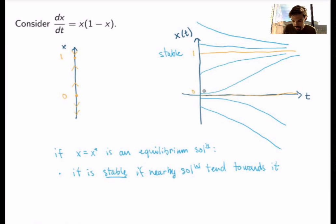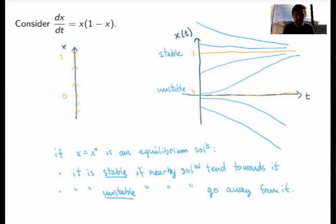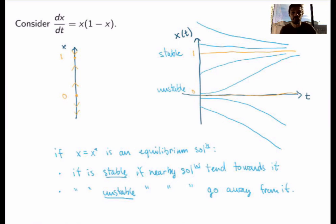On the other hand, x equals 0 is very different, because nearby solutions go away from it — we say this equilibrium solution is unstable. Again, it's obvious from the phase line: if you have a point where the arrows point away from it on both sides, that equilibrium solution is unstable.